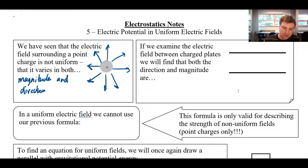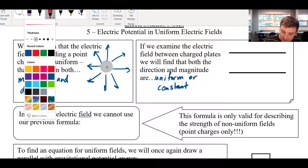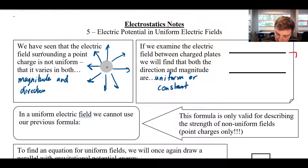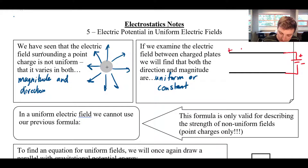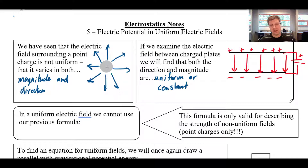What we mean by a uniform field is that both the magnitude and the direction are constant. So with two metal plates attached to a battery — positive plate on top, negative plate on bottom — field lines go from positive to negative, giving us a uniform field between the plates. Outside of the plates, it's a different story.